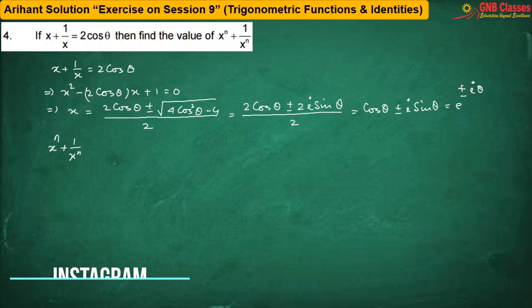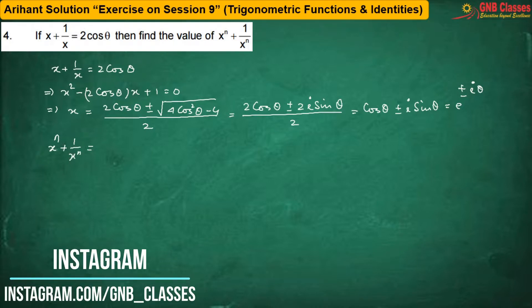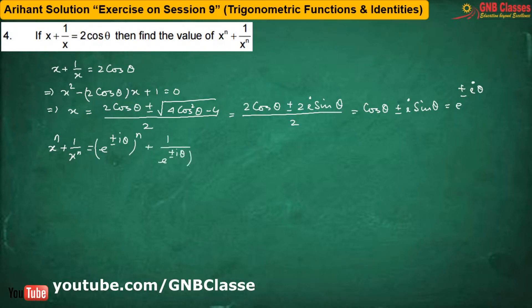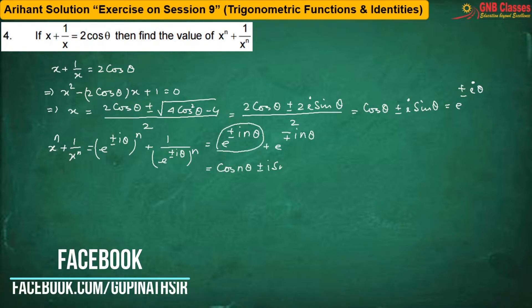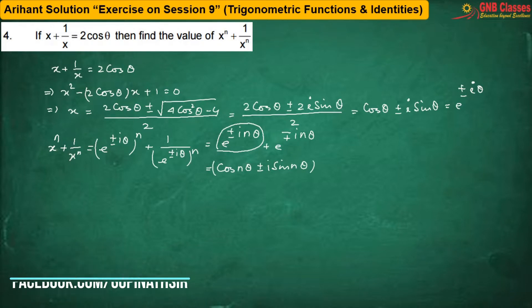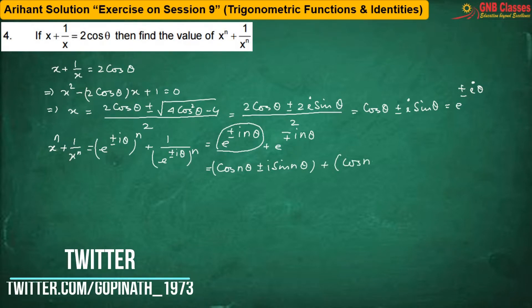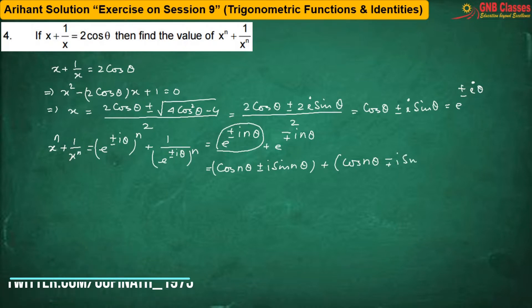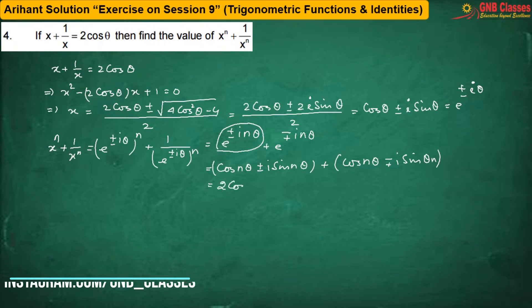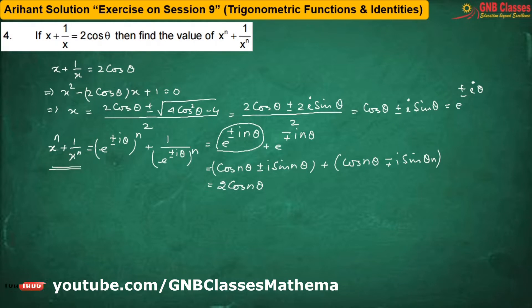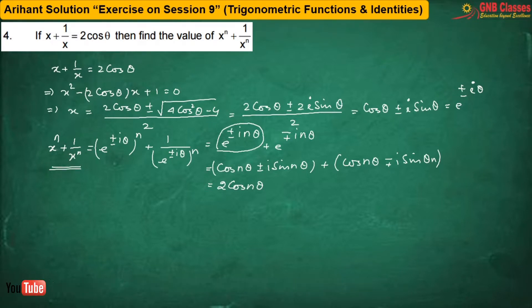Now, x^n + 1/x^n can be written as (cosθ ± i·sinθ)^n + (cosθ ∓ i·sinθ)^n. After opening the bracket, we are going to get 2cos(nθ). Therefore, the required value of x^n + 1/x^n is nothing but 2cos(nθ).